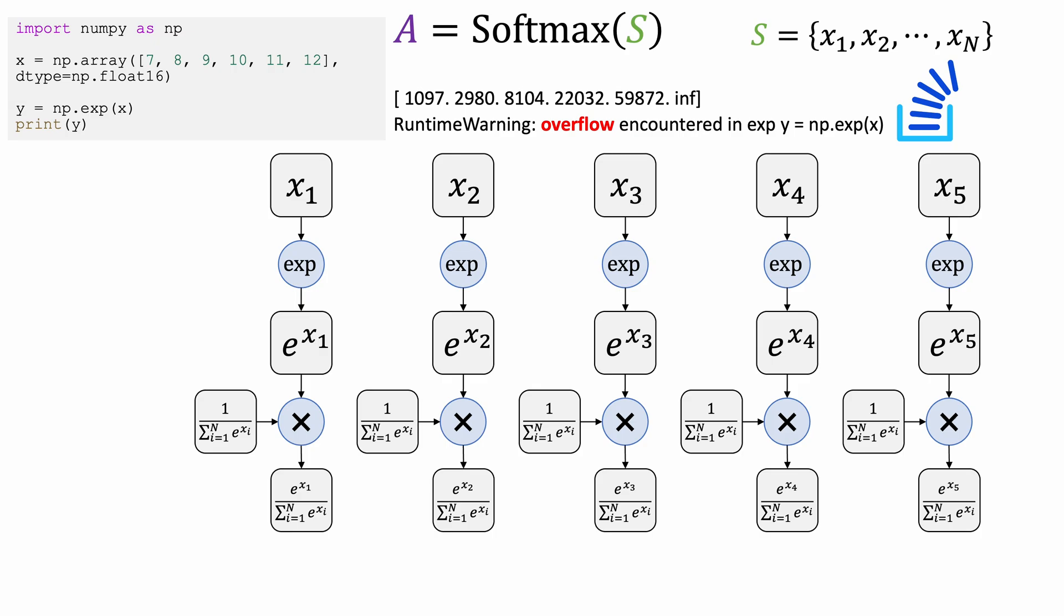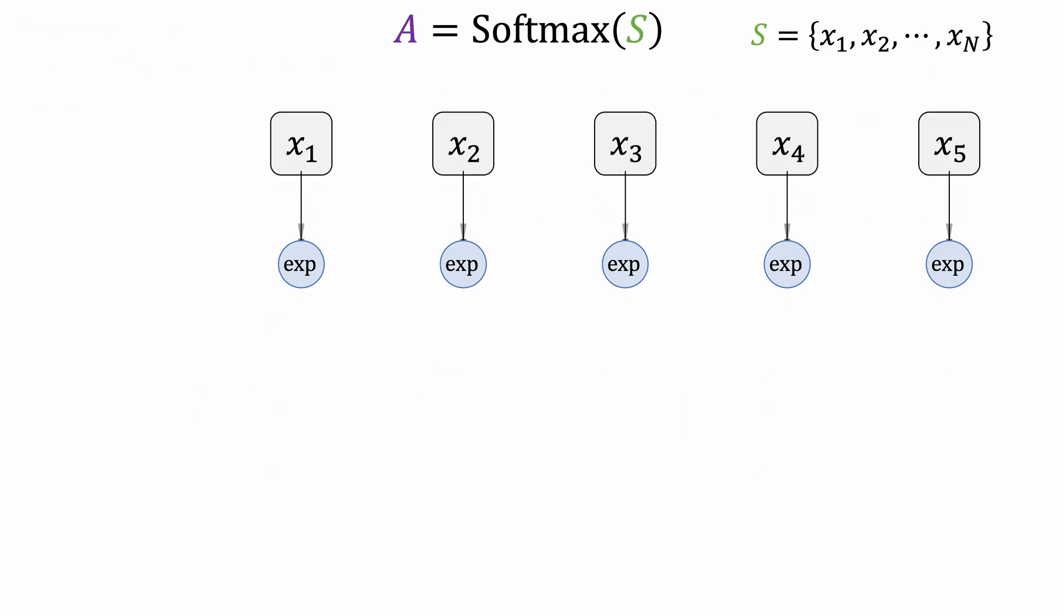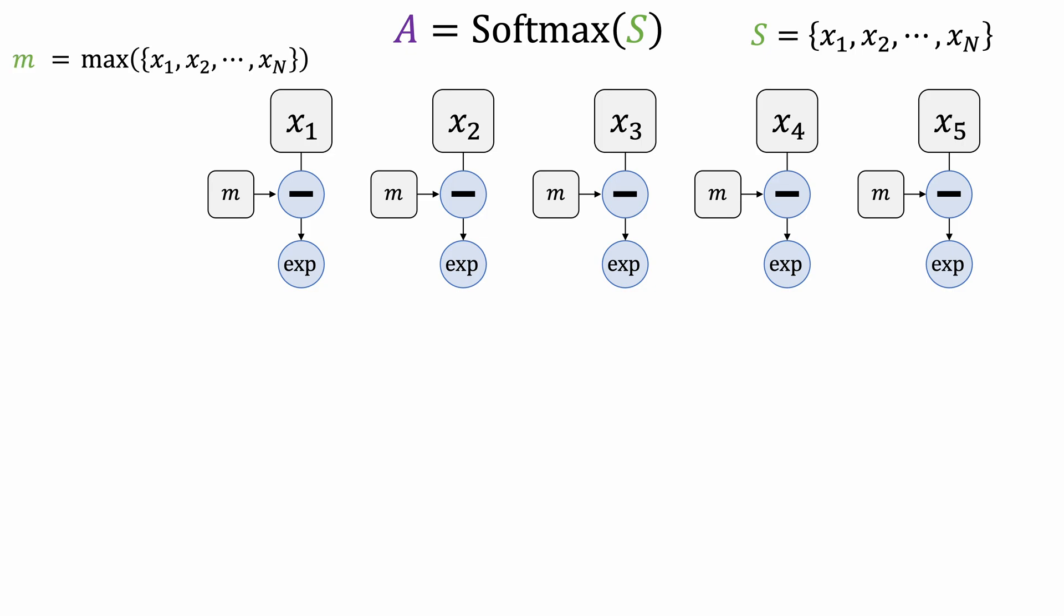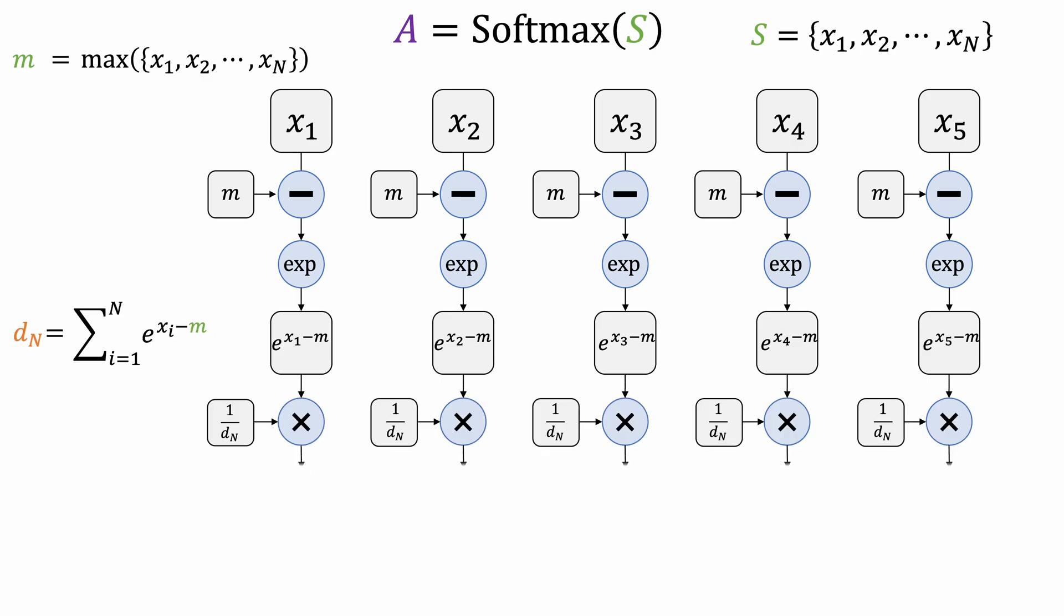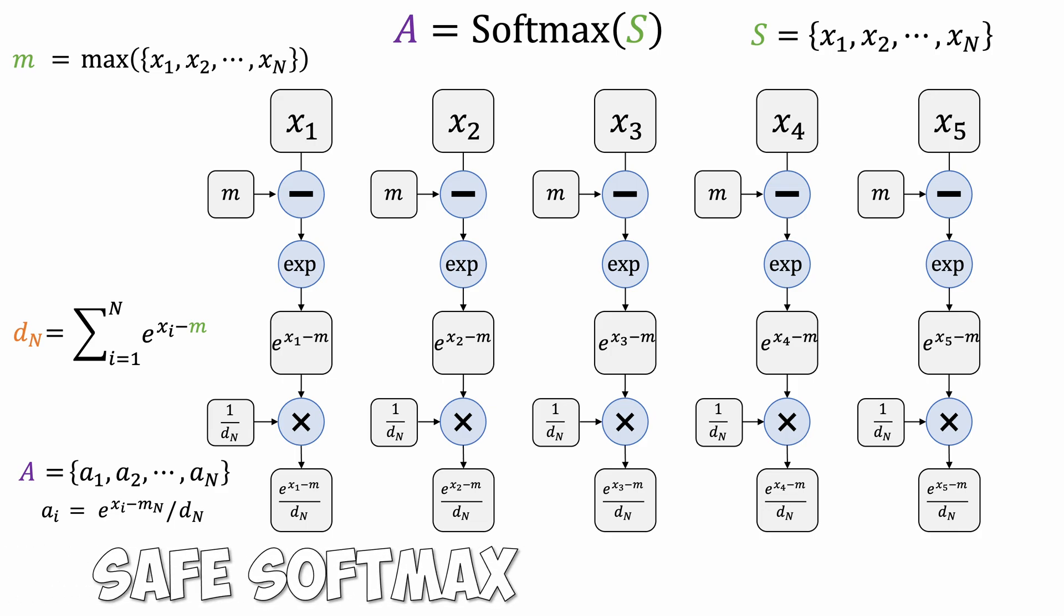With high precision, overflow occurs in the exponential function for input values over 11. Luckily, we have a simple fix. Before the exponential step, we first subtract m, the maximum value of the sequence, from each input. This prevents the overflowing issue because all the input values to the exponential function are now less than or equal to 0. This is known as safe softmax.